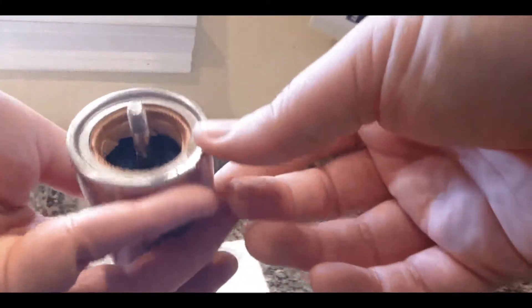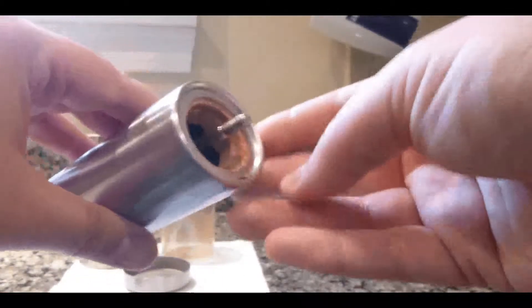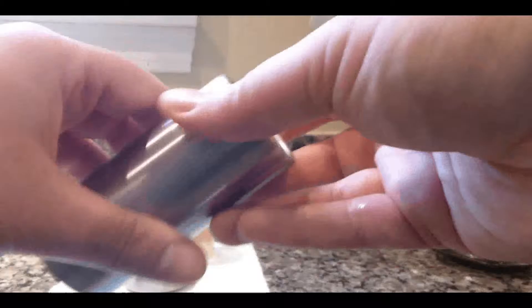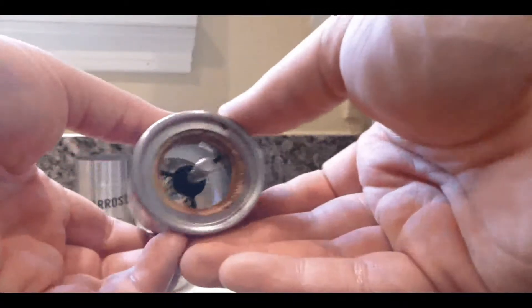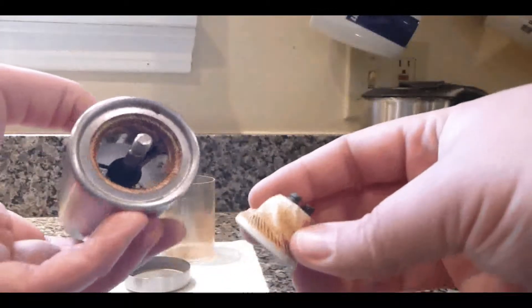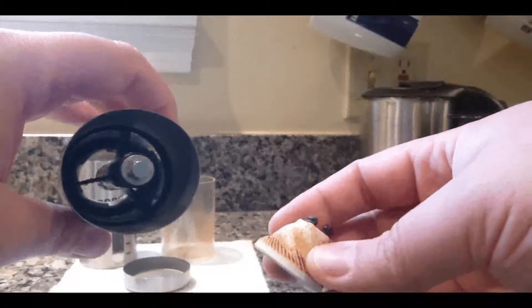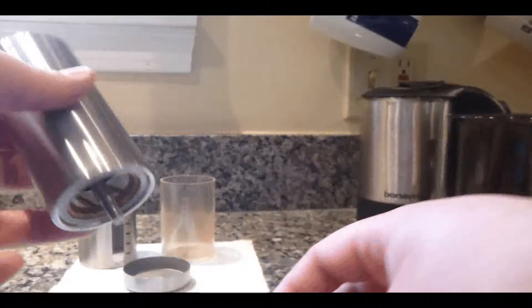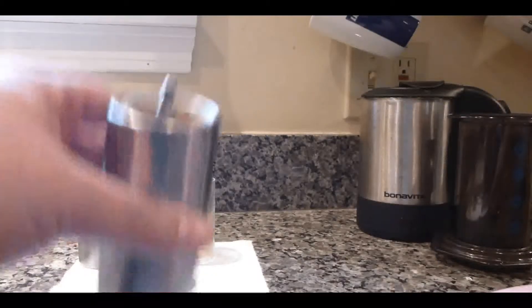And now the grinder has been disassembled. You can use a brush or just some simple water and a washcloth to clean off the ceramic pieces as well as the interior grind coffee bean holder.